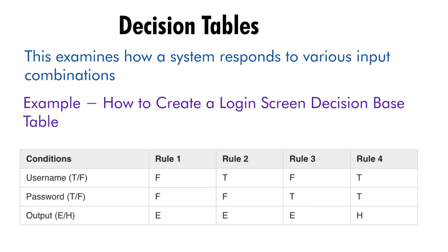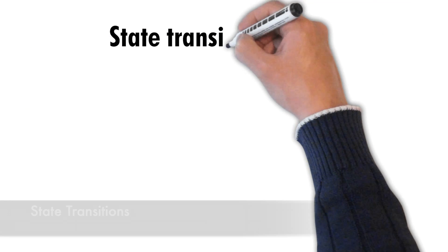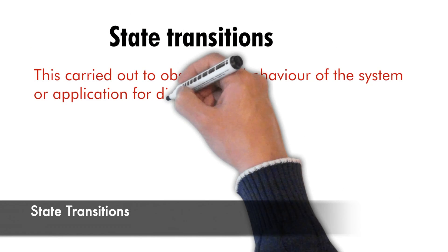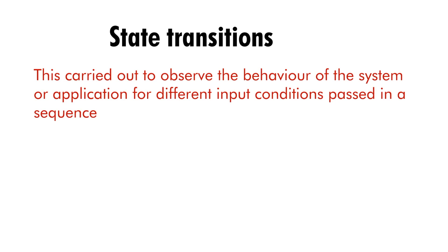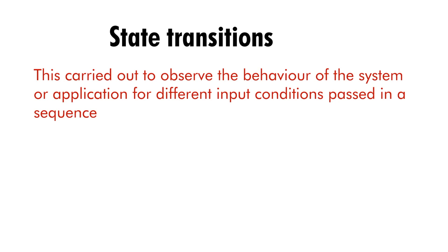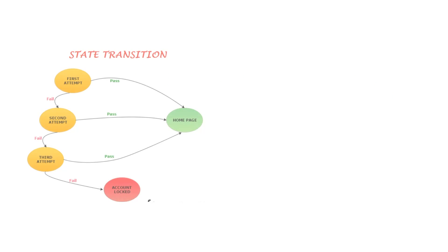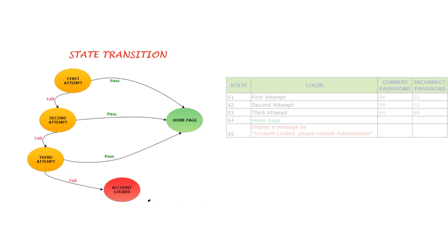Next is state transition testing. State transition testing is a black box technique carried out to observe the behavior of the system for different input conditions passed in a sequence. In this type of testing, both positive and negative input values are provided and the behavior of the system is observed.